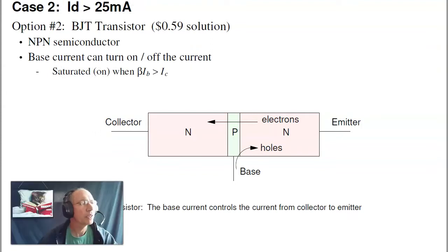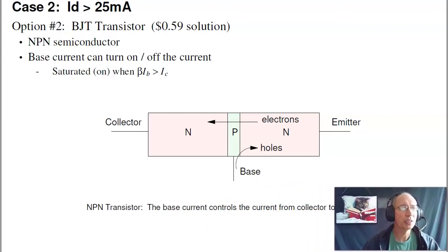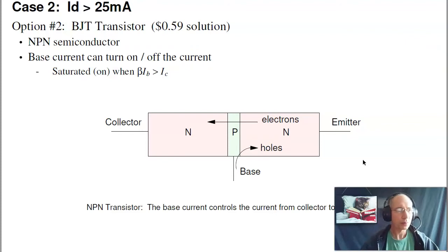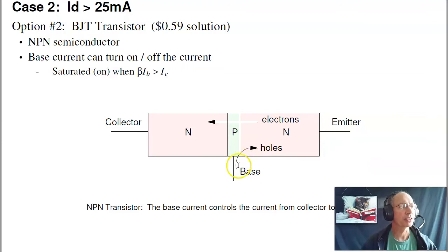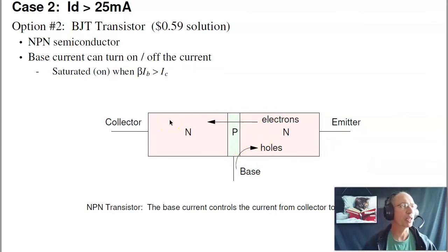If you need less than 5 volts and less than 20 milliamps, just connect the LED directly to the PIC chip through a resistor. If you need more power, use a transistor to switch. A transistor acts as an electronic switch — it takes something wimpy like a PIC processor capable of 25 milliamps and makes it more powerful, capable of driving up to 4 amps.